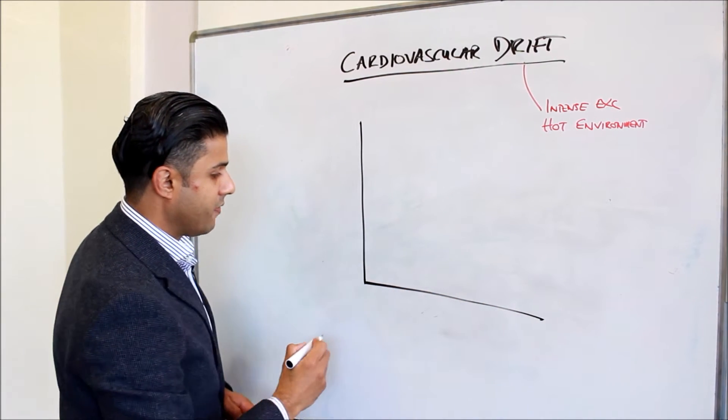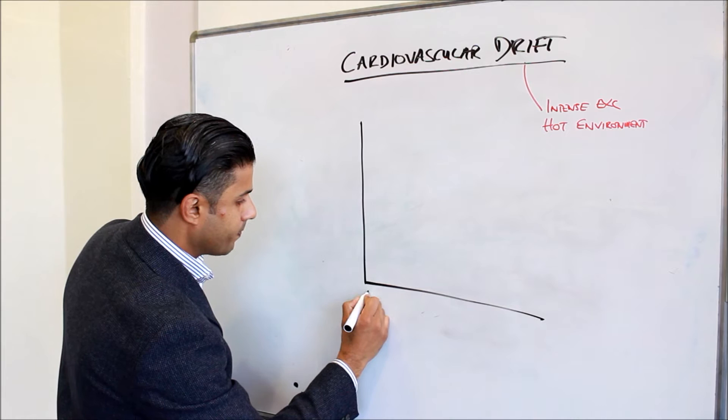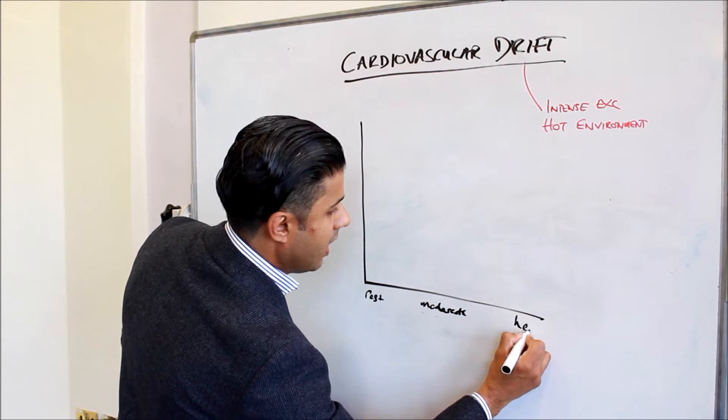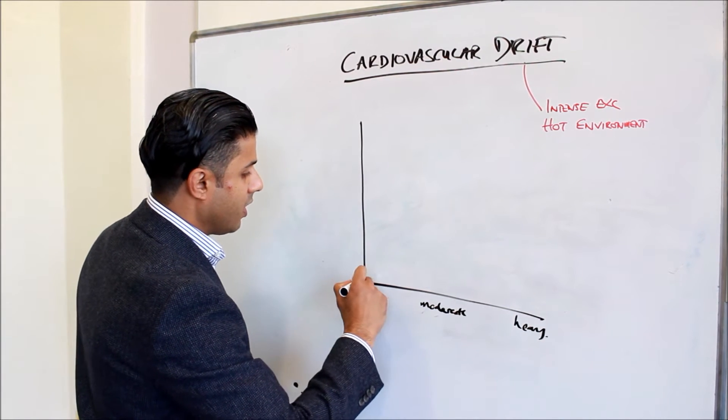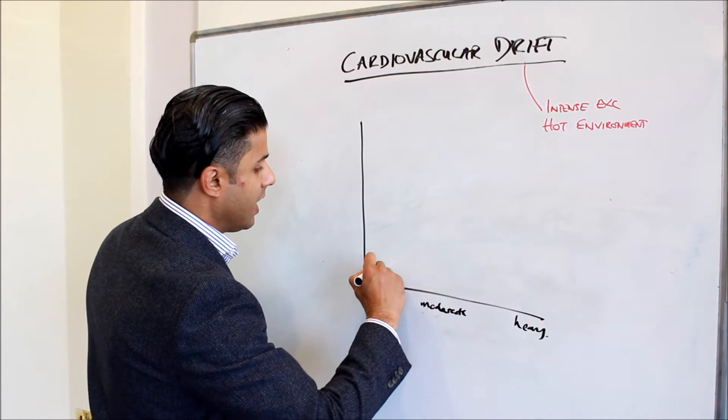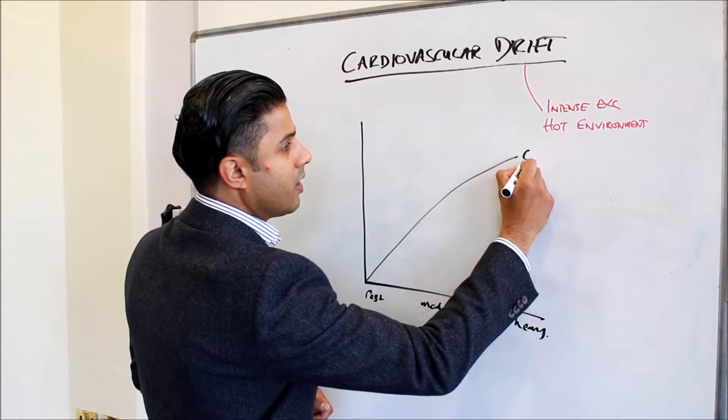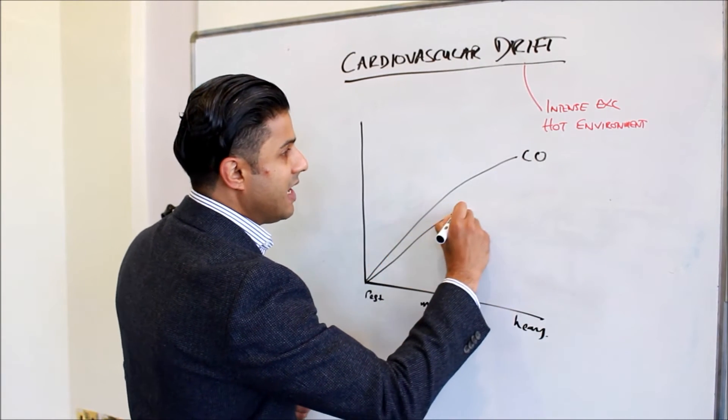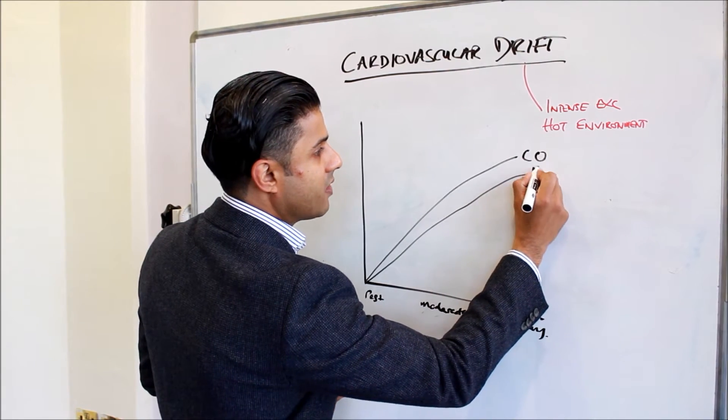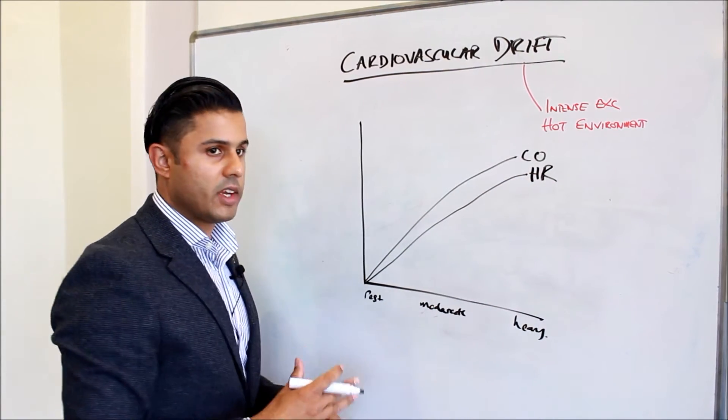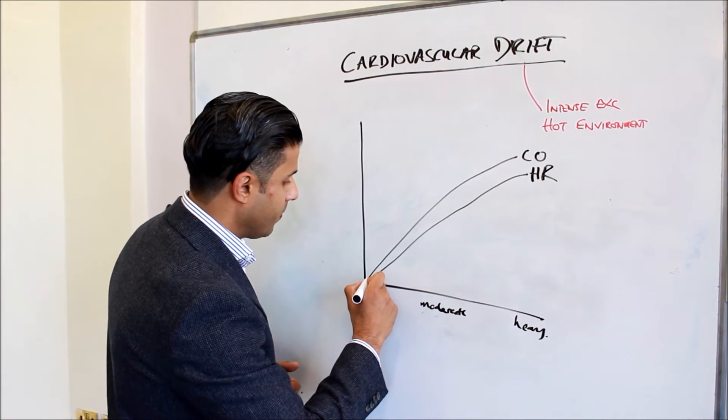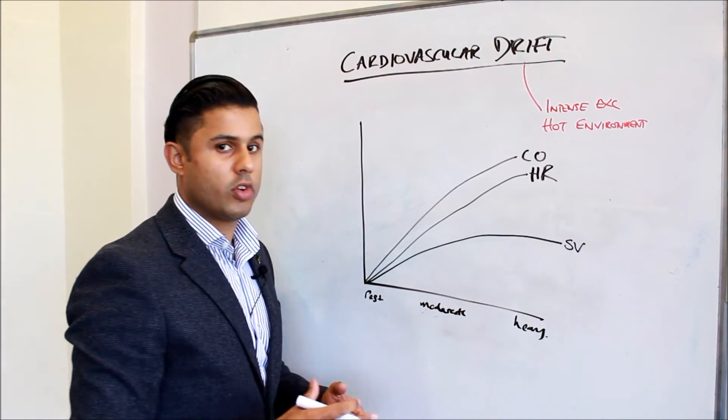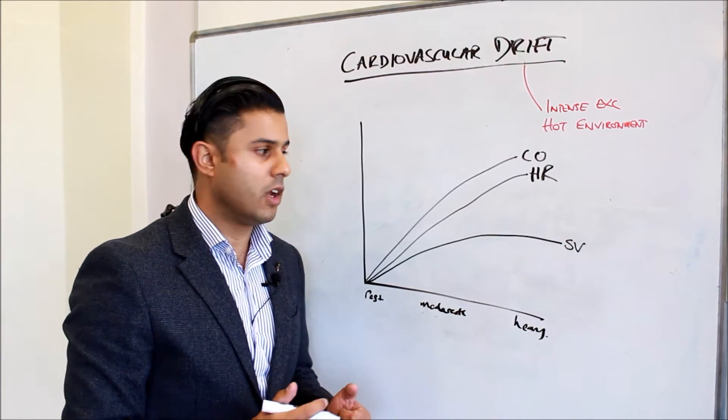Cardiovascular drift occurs in intense exercise in a hot environment. Best to see in a graph. We've got rest, moderate, and then heavy. What we're actually having with cardiovascular drift is that we always get an increase in cardiac output represented by CO. Heart rate increases linearly with the intensity of exercise. What will actually happen with prolonged exercise in the heat is you'll actually get a drop in stroke volume.